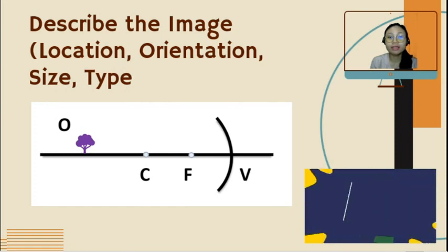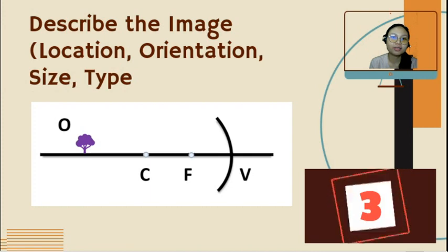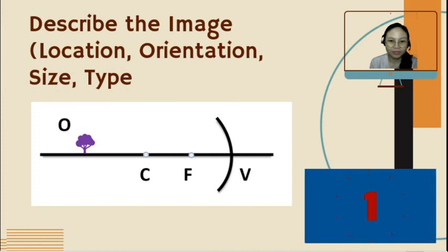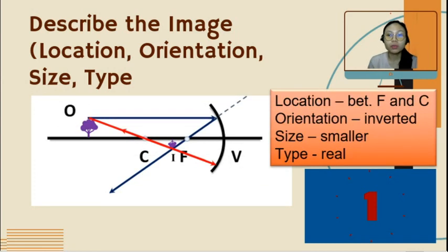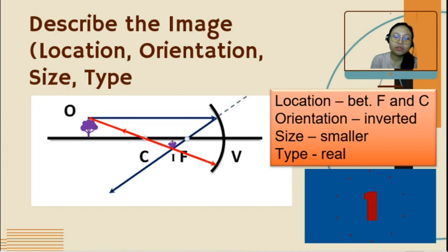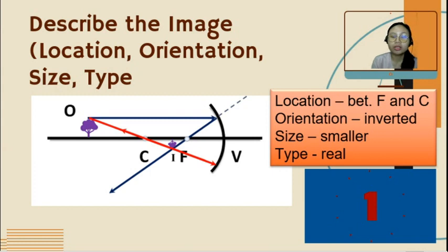Write down your answers in the comment section — it will be checked by your teacher. Time's up. The image is formed between F and C. It is inverted, it is smaller, and the type of image is real. Because it is inverted — an inverted image is always a real image.